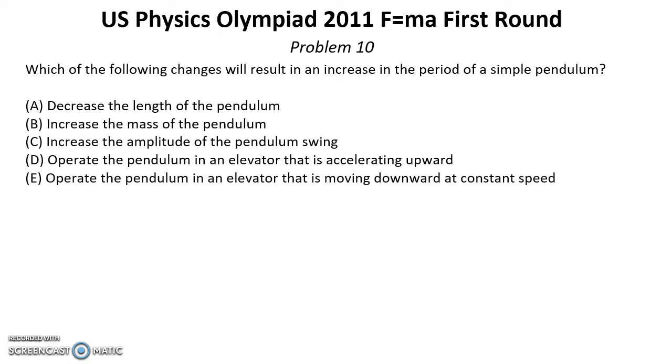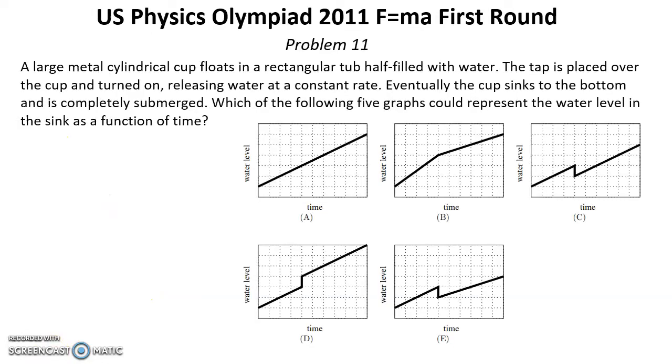Solution for this problem you can find below this video in the reference in the description. Each of the following changes will result in an increase in the period of a simple pendulum. Problem number eleven. Solution for this problem you can find by reference below this video in the description. A large metal cylindrical cup floats in a rectangular tube half filled with water. The tap is placed over the cup and turned on, releasing water at a constant rate. Eventually the cup sinks to the bottom and is completely submerged. Which of the following five graphs could represent the water level in the sink as a function of time?